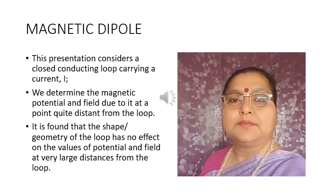This presentation considers a closed conducting loop carrying a current I. We determine the magnetic potential and field due to it at a point quite distant from the loop. It is found that the shape or geometry of the loop has no effect on the values of the potential and field at very large distances from the loop.